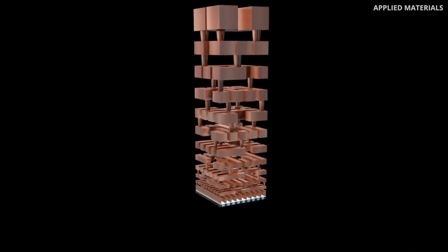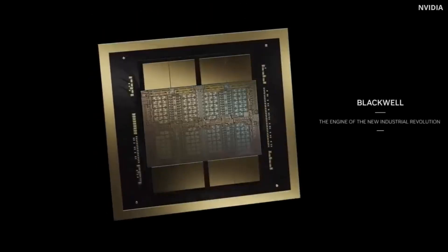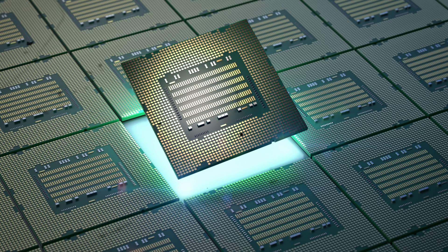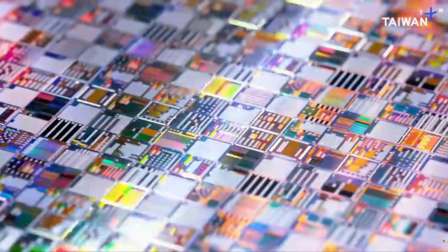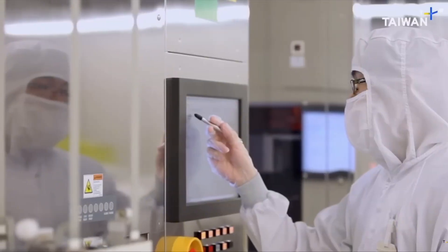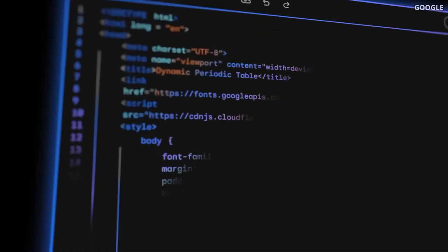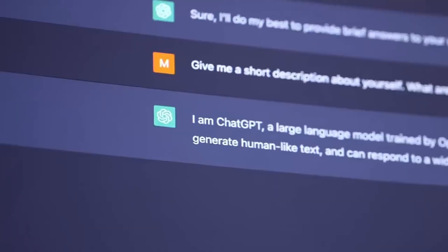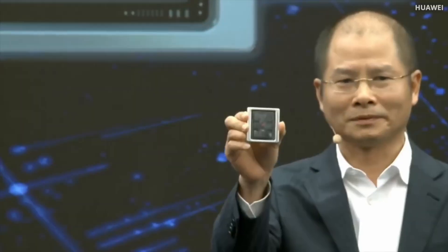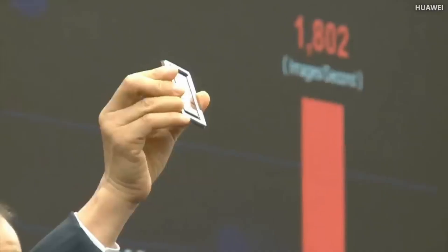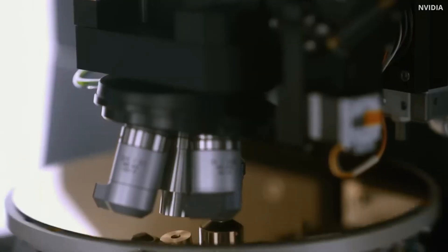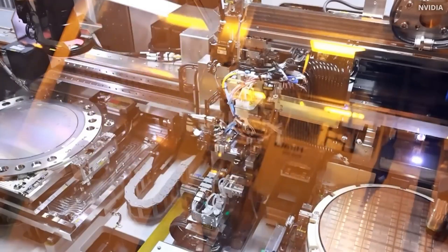To understand what's really going on, we need to talk about the most fundamental part of all modern electronics, the transistor. A transistor is a microscopic switch that can turn electrical signals on or off billions of times per second. Everything digital in your life, your phone, your laptop, even services like ChatGPT, runs on billions of these little switches. The more of them you can pack onto a chip, the more powerful that chip becomes.